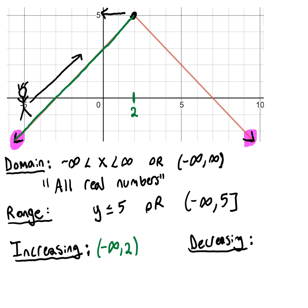And then from that point it starts going down. Now if I'm a person riding this graph like a roller coaster, it's decreasing, and so that would be from 2 to infinity.